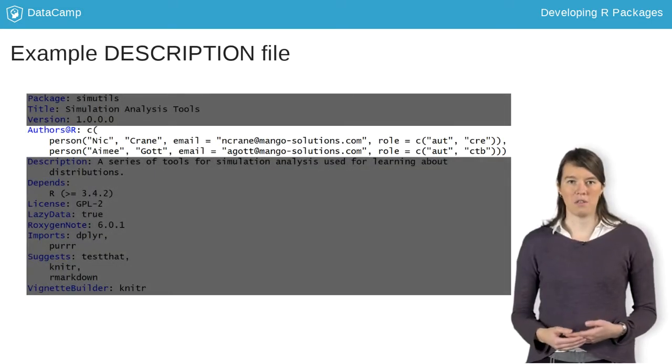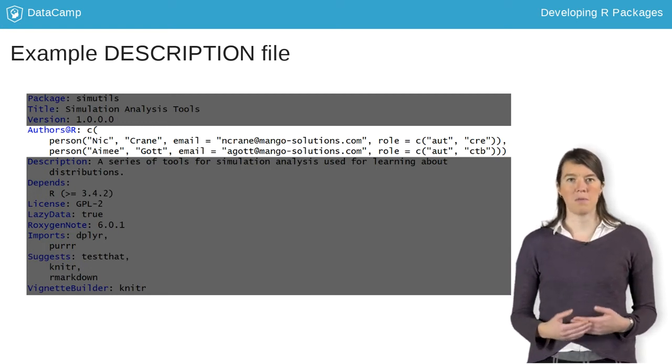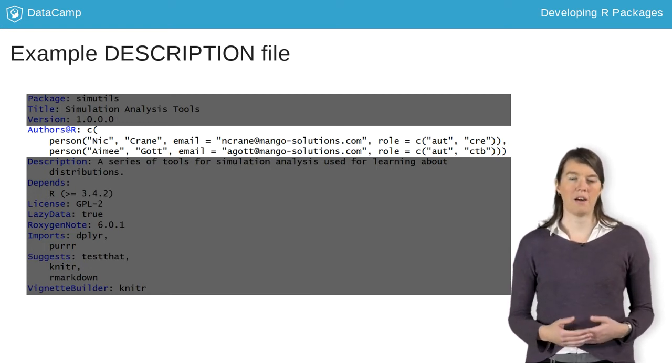The authors at R field is where you list the package authors as R code. The R function Person helps us to keep this in the right format. You need to give the first name, last name, email and role.